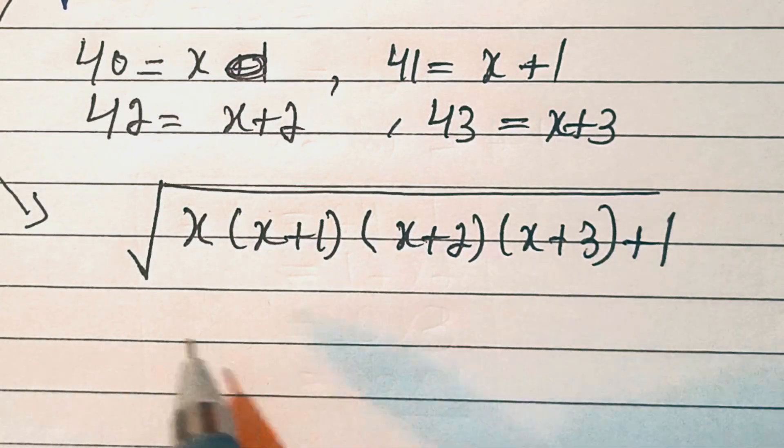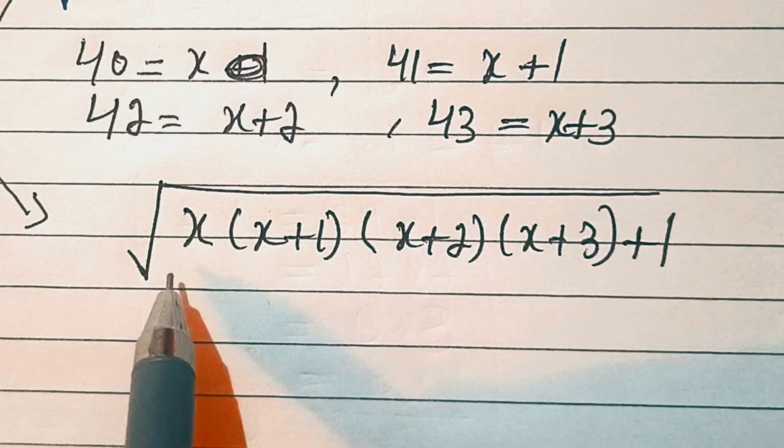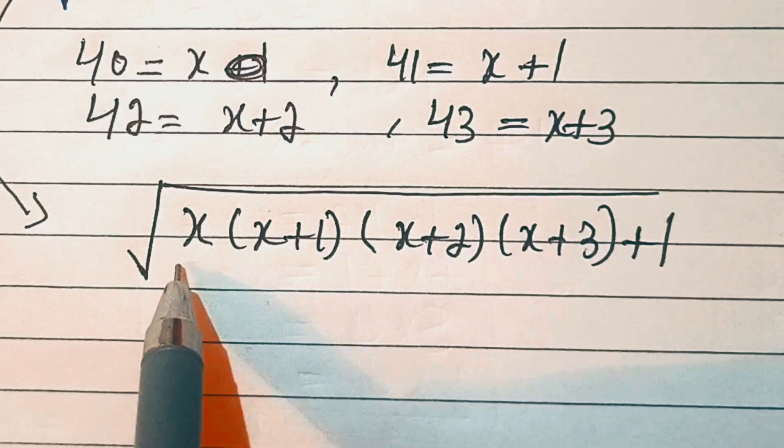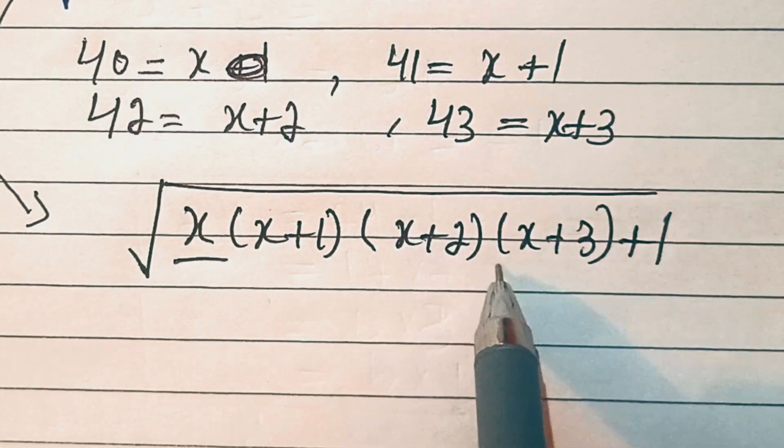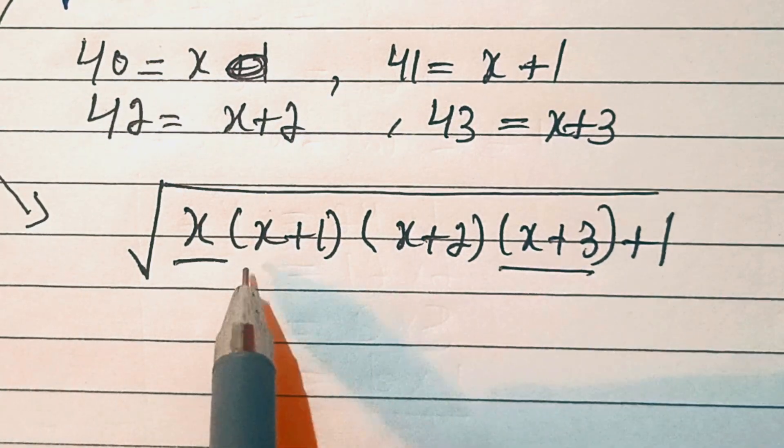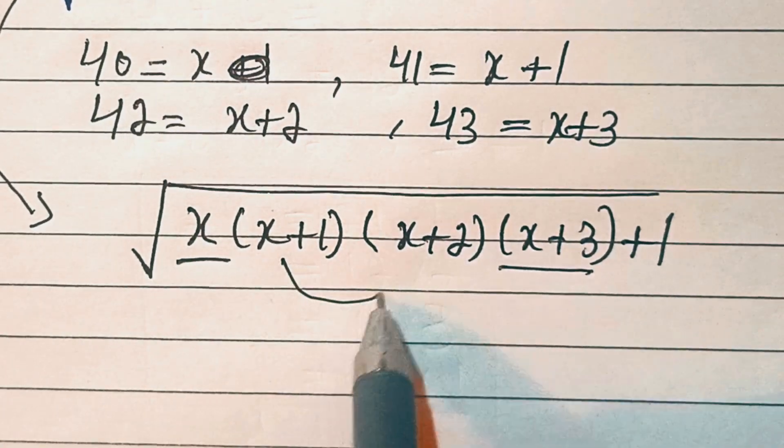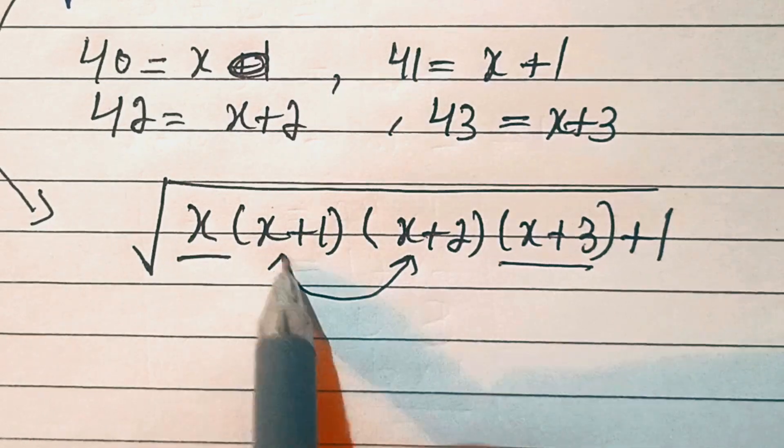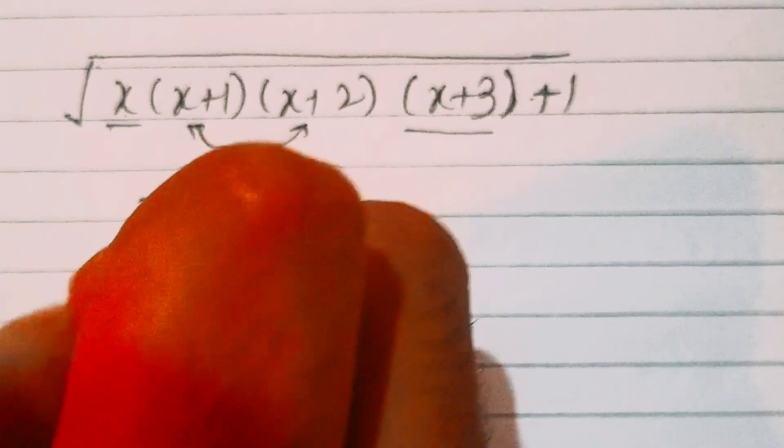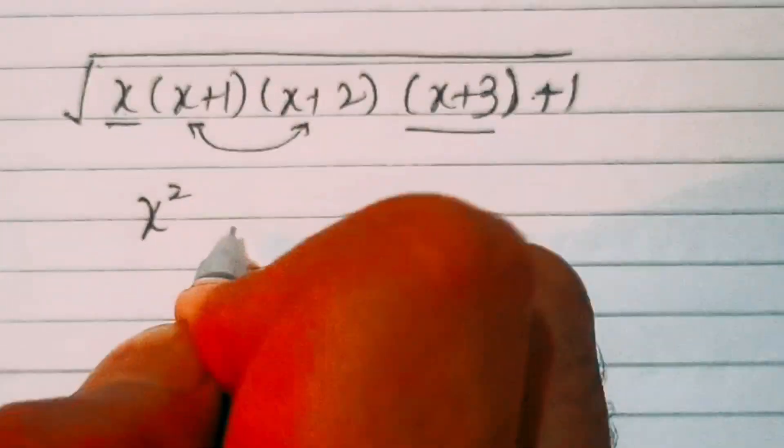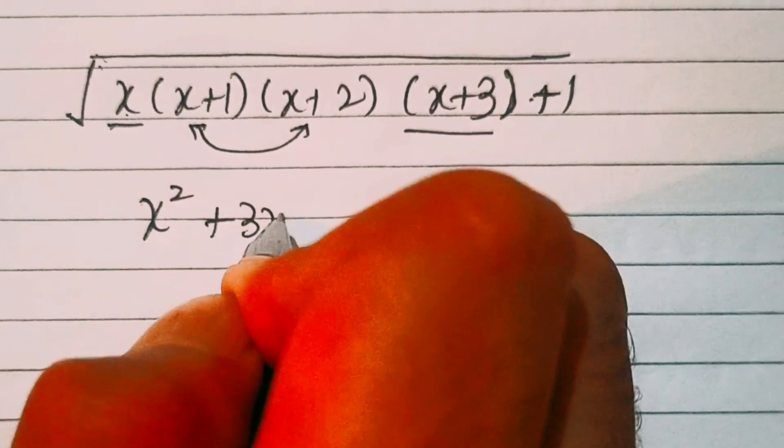Now we'll multiply these variables. First we'll multiply x by x plus 3, and then we'll multiply x plus 1 with x plus 2. What we'll get is x into x is x squared, plus x into 3 is 3x.